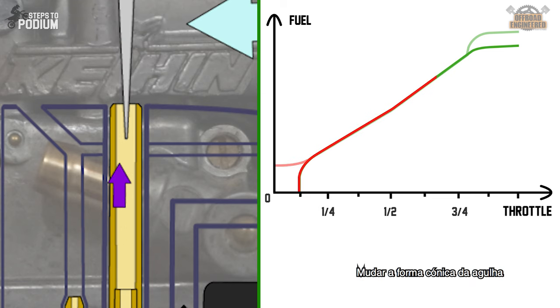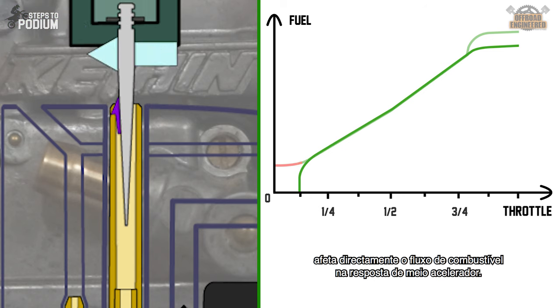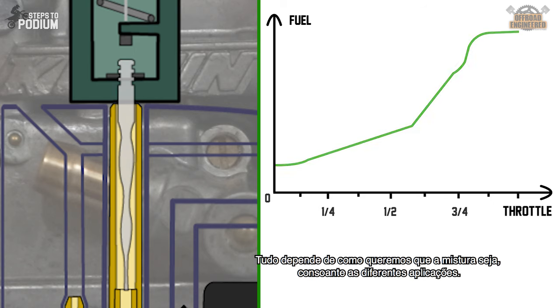Changing the tapered shape of the needle will have a huge impact on the mid throttle fuel flow. Different shaped needles will provide different engine responses and it all comes down to how you want the mixture to be for a specific application.